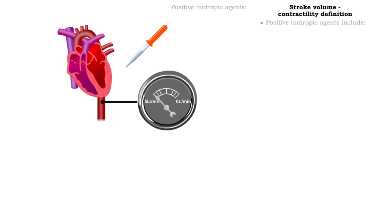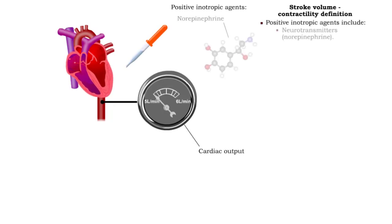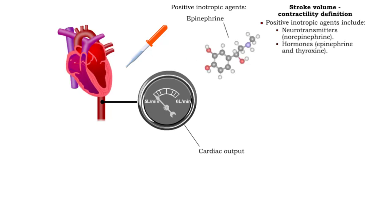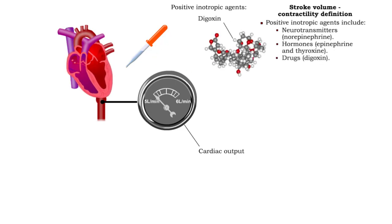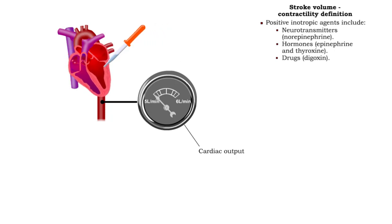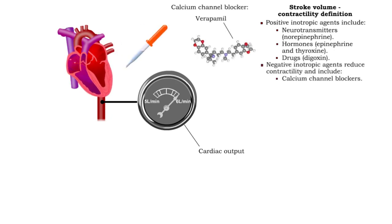Positive inotropic agents include neurotransmitters, hormones, and some drugs. Certain drugs, such as calcium channel blockers and some anesthetics, are negative inotropic agents and reduce contractility.